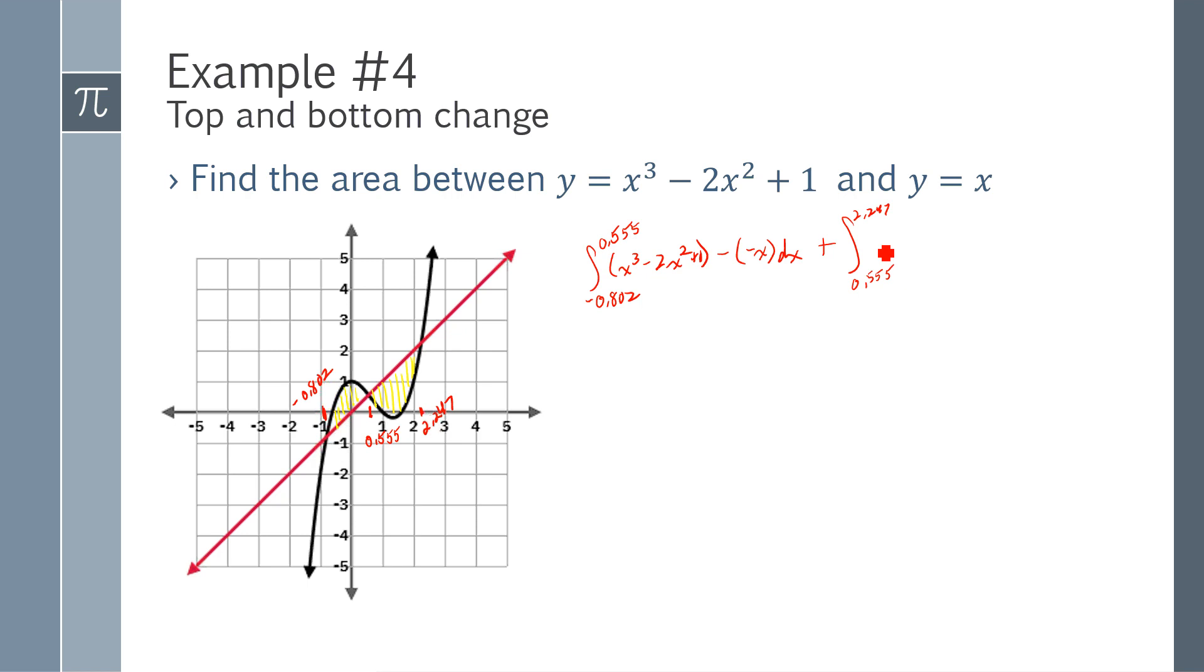And then I'm going to add on the area of the other region, which goes from 0.555 to 2.247. Here, the red is on top, which is my linear, minus the bottom, my cubic.